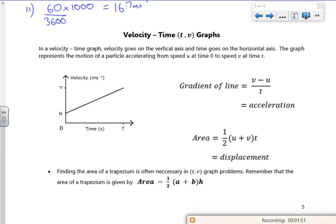Now if I kind of draw a little triangle in this, my gradient is the change going up, which is V minus U, over the time. Now we know that a change in speed over time, a change in velocity over time, is acceleration. So I'm saying then that my acceleration is V minus U over T.